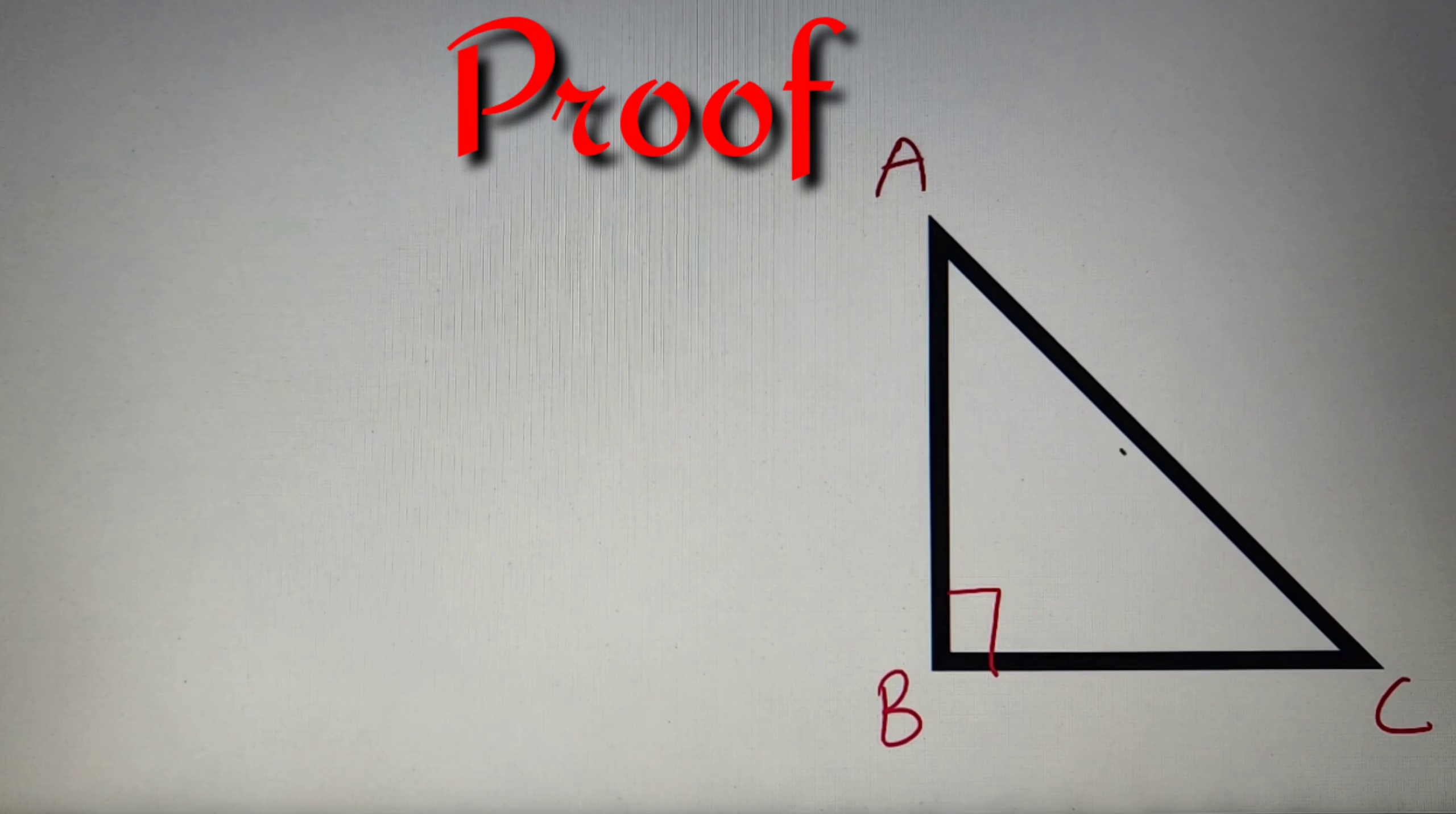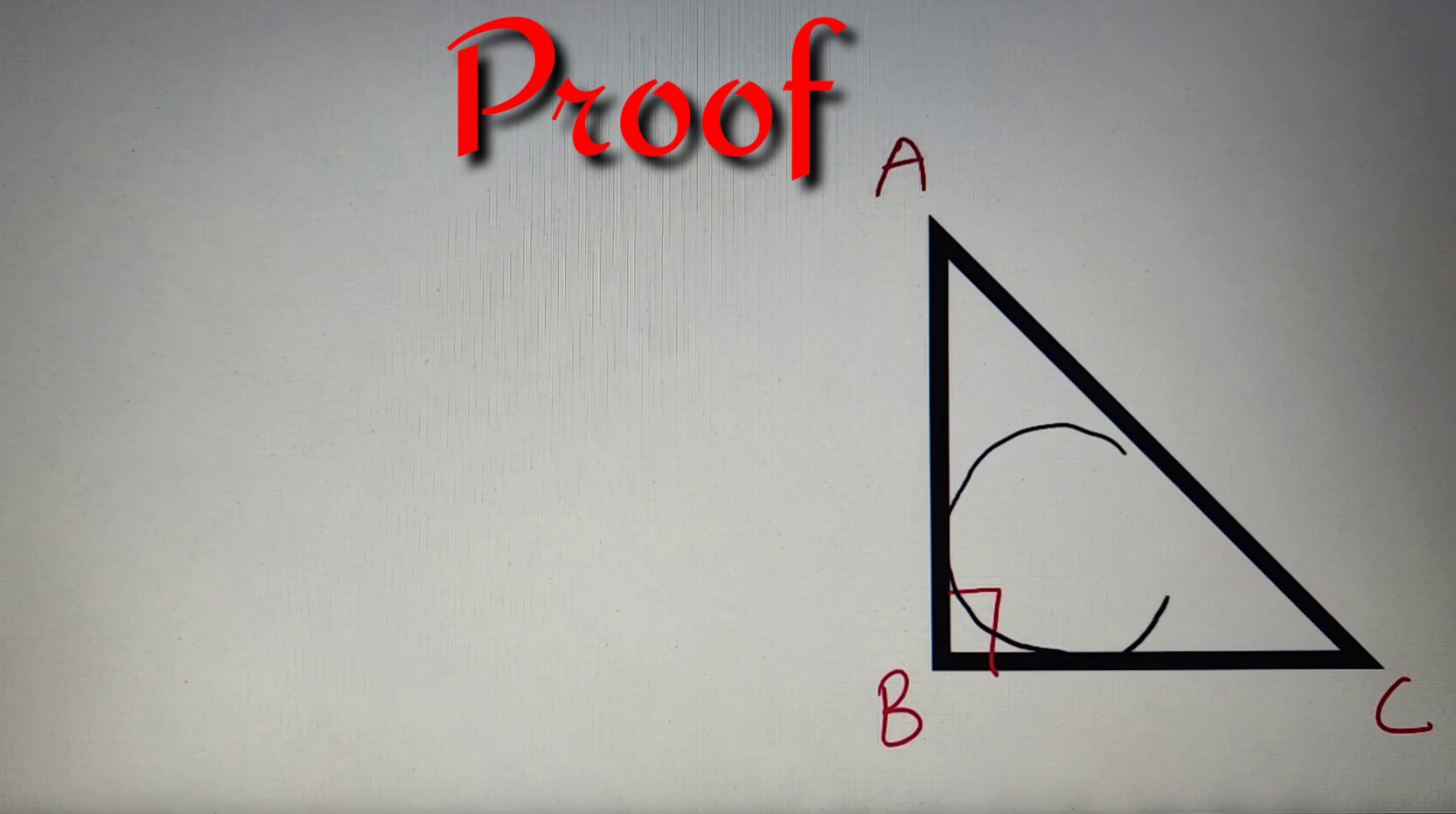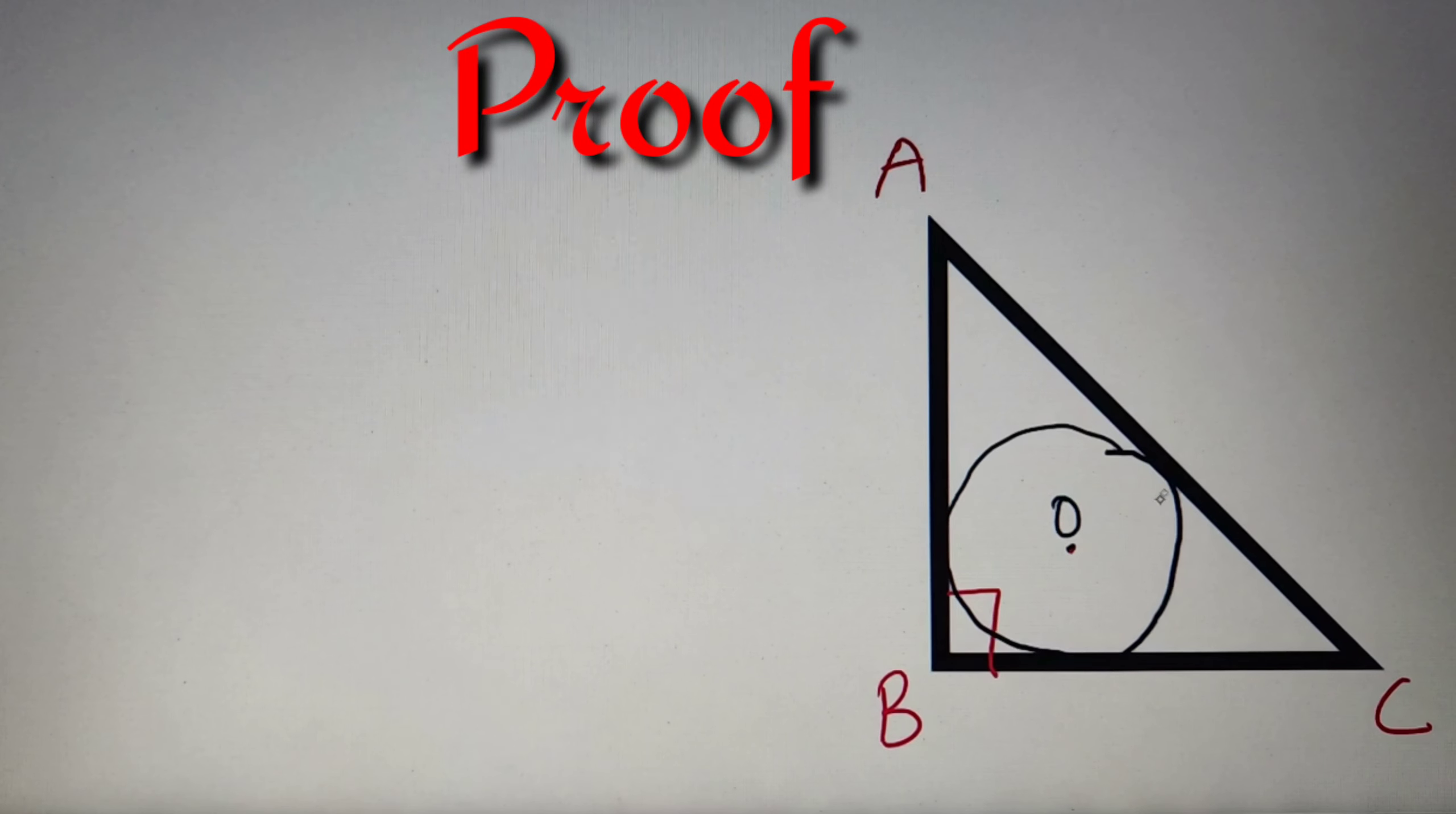So let us draw the incircle for this given triangle ABC which touches all the three sides of the triangle ABC. Now each side of the triangle will touch the circle at exactly one point. So let's consider the point as D, E and F respectively for the sides of AC, BC and AB. Now all the three distances OD, OE and OF are equal to each other and they will be equal to the inradius of the triangle.